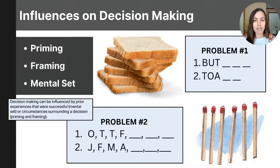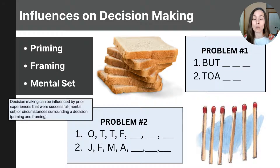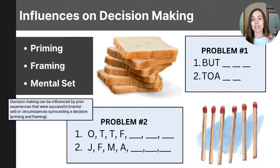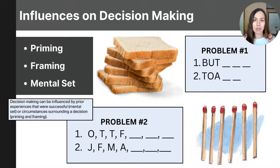Another way you can be influenced in your decision making is through your mental set. Mental set is the tendency to approach a problem in one particular way — usually a way you've been successful in the past — and we often use that mental set even if there is a better approach. Mental sets can help us, but they can also make it difficult to consider other solutions when we think we already have one, even if it's not the most optimal approach.